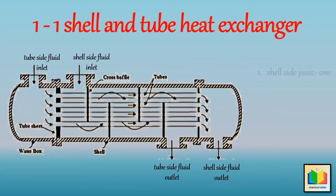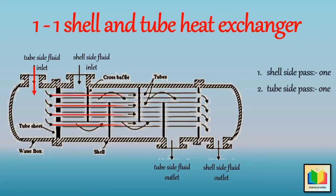The first number, that is 1, stands for shell side pass, and the second number, that is 1, stands for tube side pass. Hence, in a 1-1 shell and tube heat exchanger, the shell side fluid and tube side fluid flow once through the exchanger, as there is no partition.